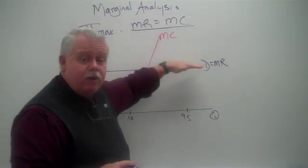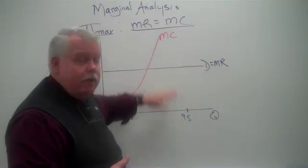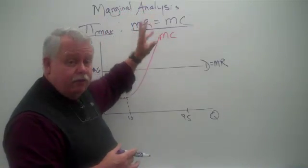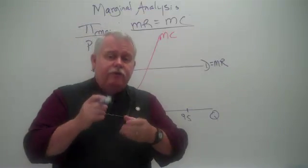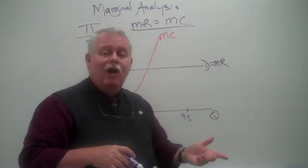Now, that's only true when the demand curve is flat. But it will be true for the firm in perfect competition. And so we're going to call this marginal analysis, looking at the marginal cost and the marginal revenue curve and using that to determine how many units to produce to maximize our profit.